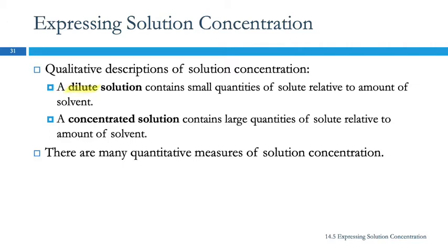So, dilute versus concentrated — and this means exactly what you think it means. If you go to the grocery store and you want to buy frozen orange juice, you can buy frozen concentrate. They took a lot of the water out of it, and you can take that concentrated solution and dilute it by adding more water to get the regular kind of orange juice. So, dilute means there's small quantities of solute compared to the amount of solvent, and concentrated means there's large quantities — just relative terms.